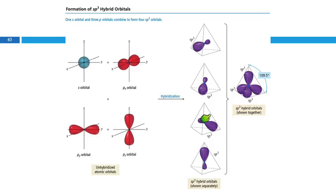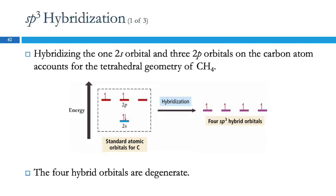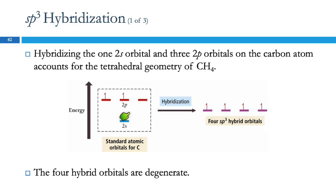The energies of the new orbitals are going to be between the original energies. If you think about averaging these energies, the average has to be between the highest and the lowest value. So these orbitals are going to be a little higher in energy than s, but lower in energy than p. We say those orbitals are degenerate, meaning they're all the same.